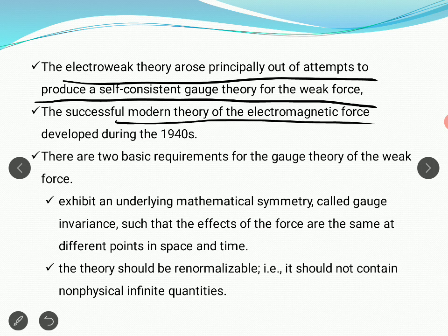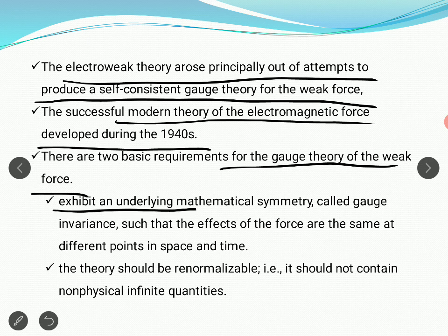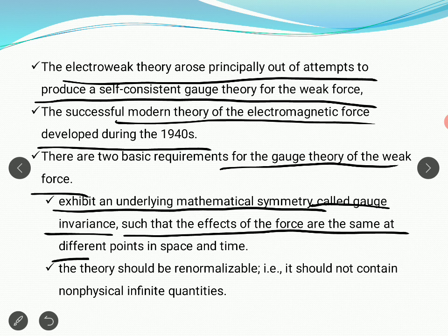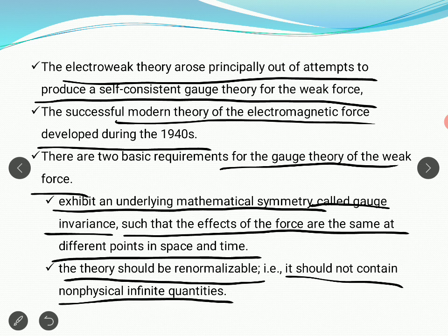The successful modern theory of electromagnetic force was developed in the 1940s. There are two basic requirements of the gauge theory of weak force — meaning the electroweak theory. First, it exhibits an underlying mathematical symmetry. Gauge theory gives you a mathematical symmetry such that under certain operations certain components remain invariant — called gauge invariance — so that the effects of the force are the same at different points in space and time. Second, the theory should be renormalizable, meaning it should not contain non-physical infinite quantities. The quantities considered in this kind of theory should not be infinite but should have finite values.